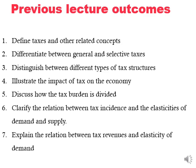We also saw that everything we earn and most of the things we buy are taxed. For example, income tax is deducted from our income and sales tax is added to the price we pay when we buy a commodity. We also distinguished between general and selective taxes and discussed different types of tax structures, including proportional tax, progressive tax, and regressive tax.